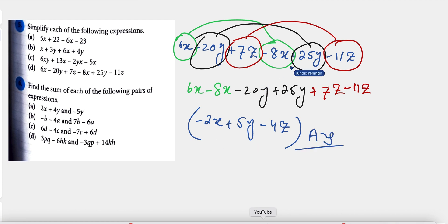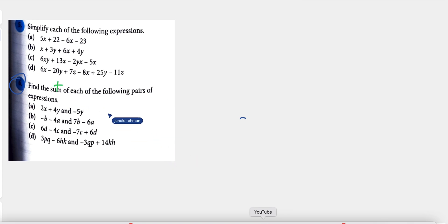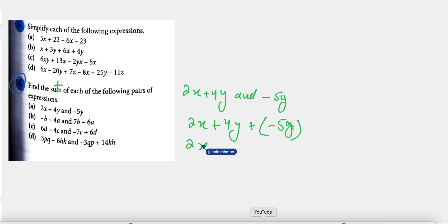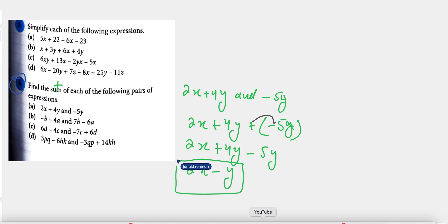Now we move to question number 6, which says: find the sum of each of the following pairs of expressions. Sum means addition. The first expression is 2x plus 4y, added to minus 5y. We write 2x plus 4y plus minus 5y. Since we have y and y as the same variable: 4 minus 5 gives minus 1y, where 1 is the invisible coefficient. The answer is 2x minus y.